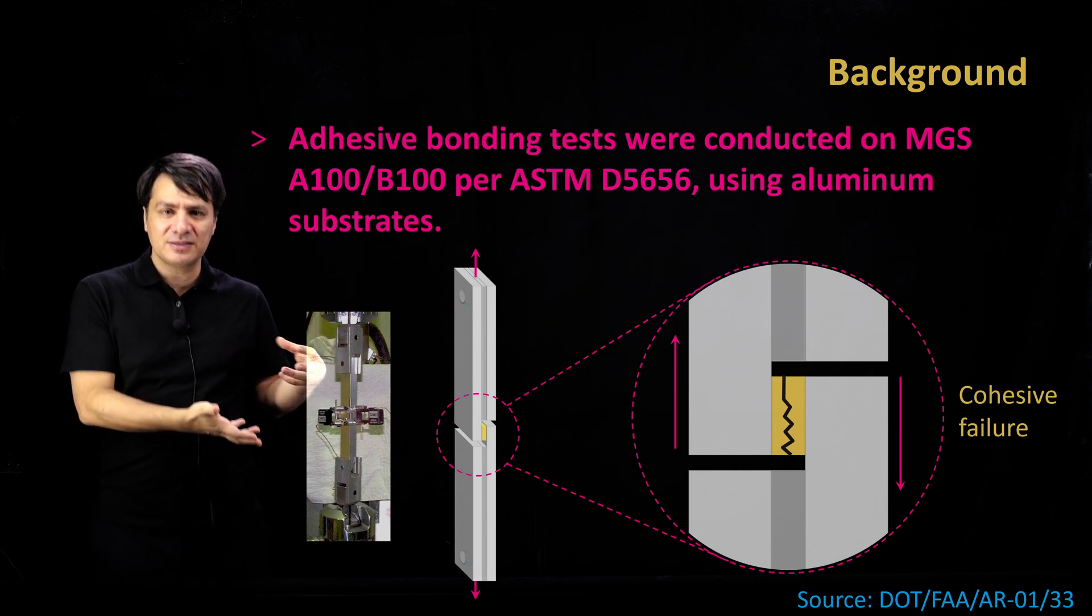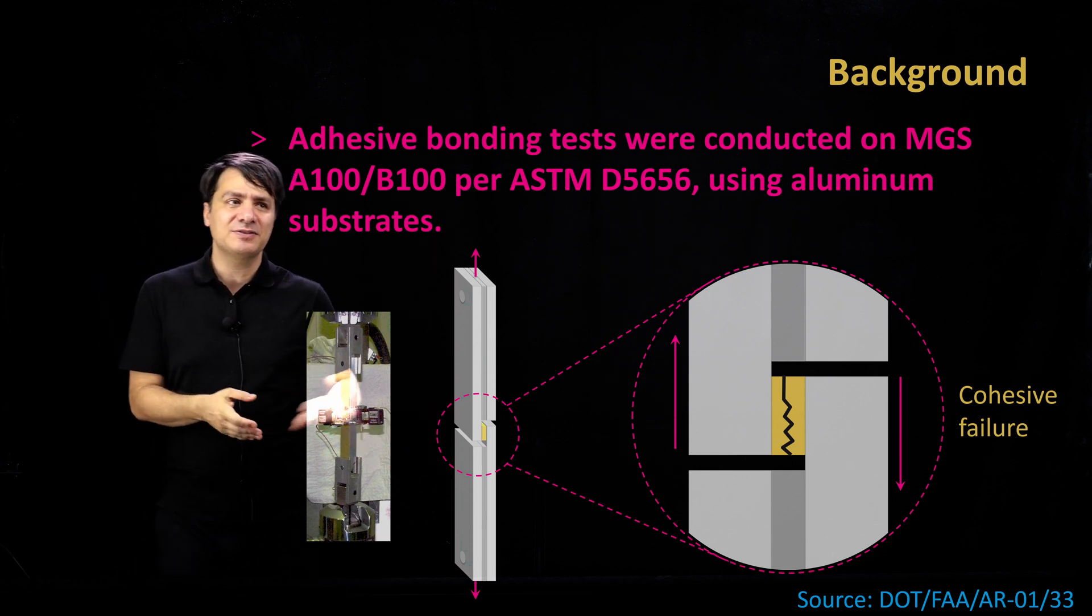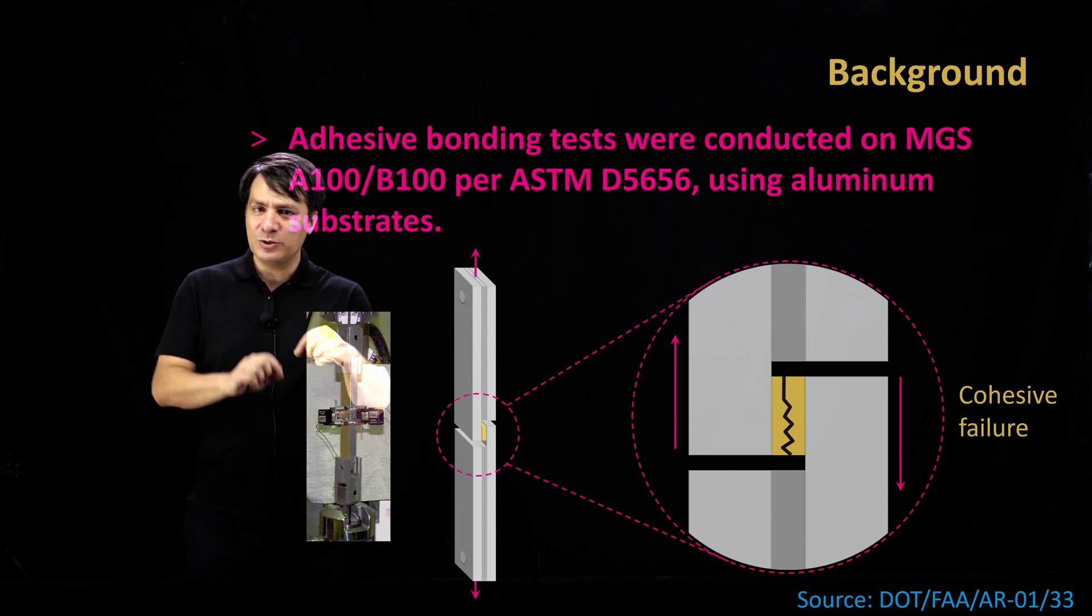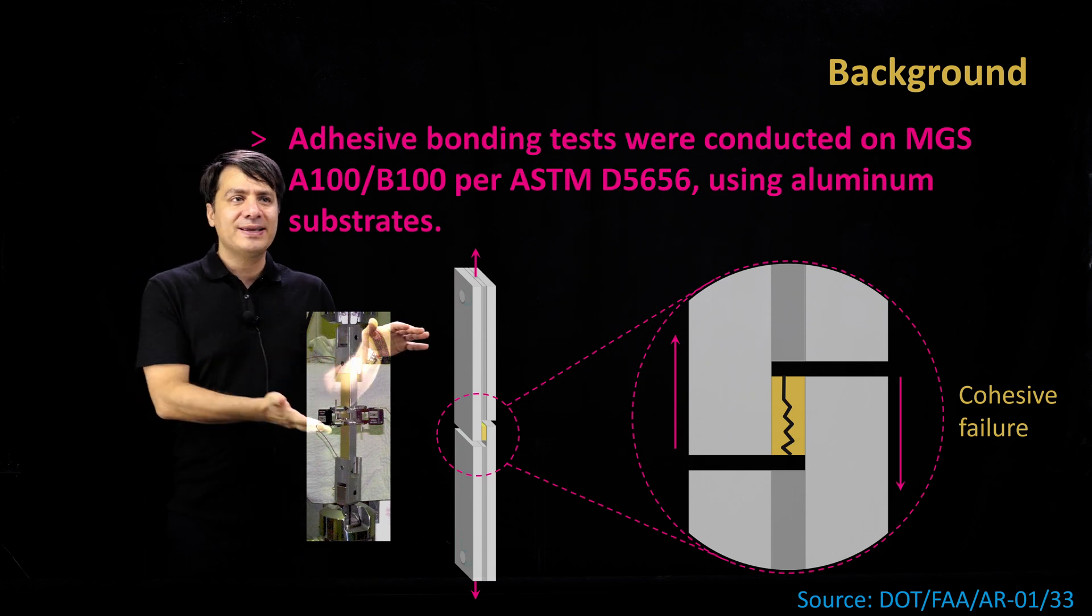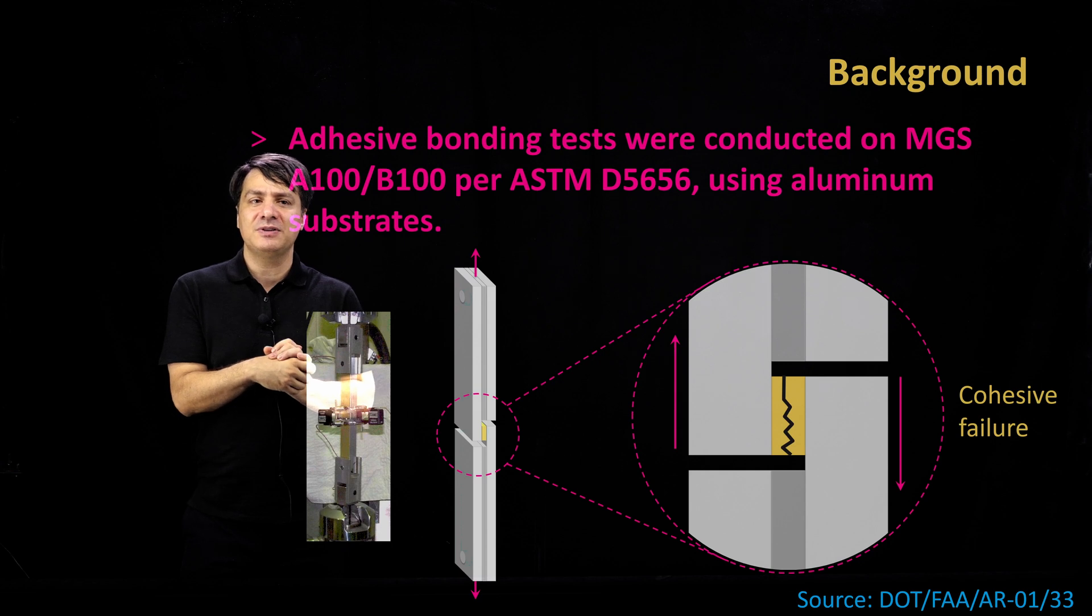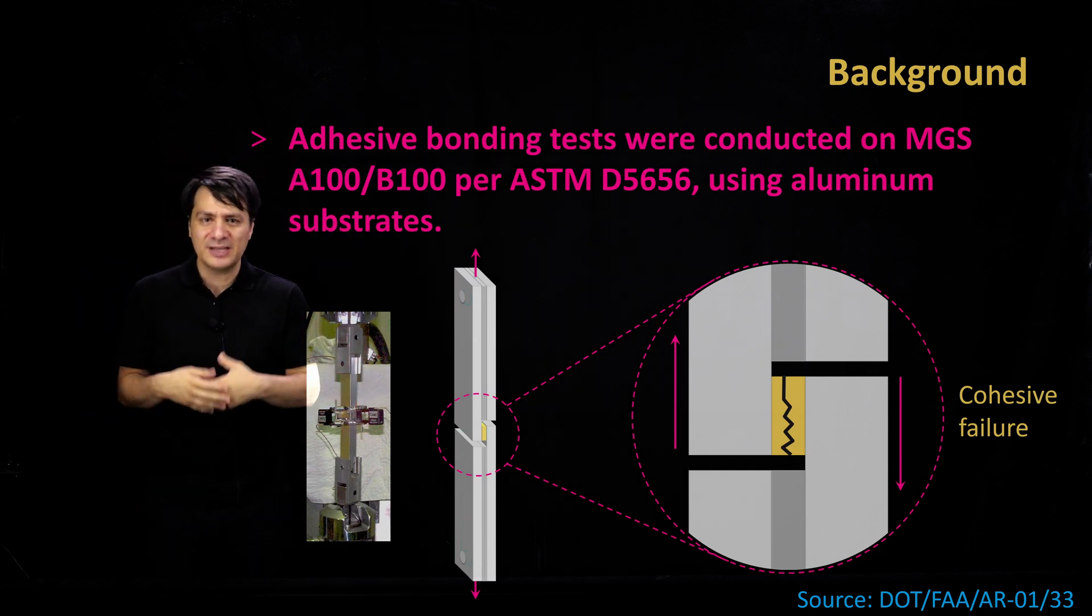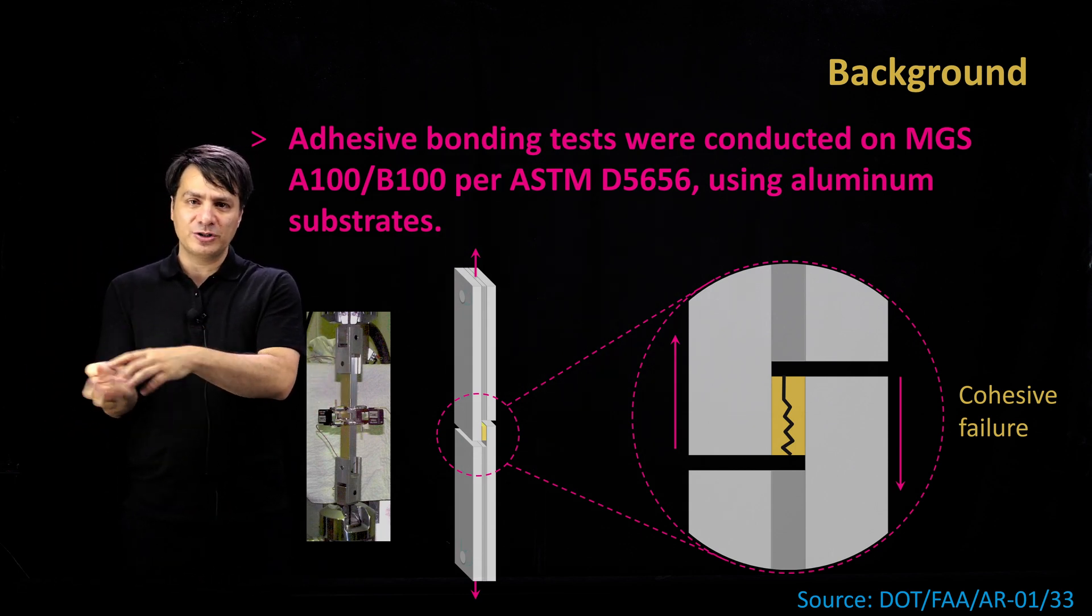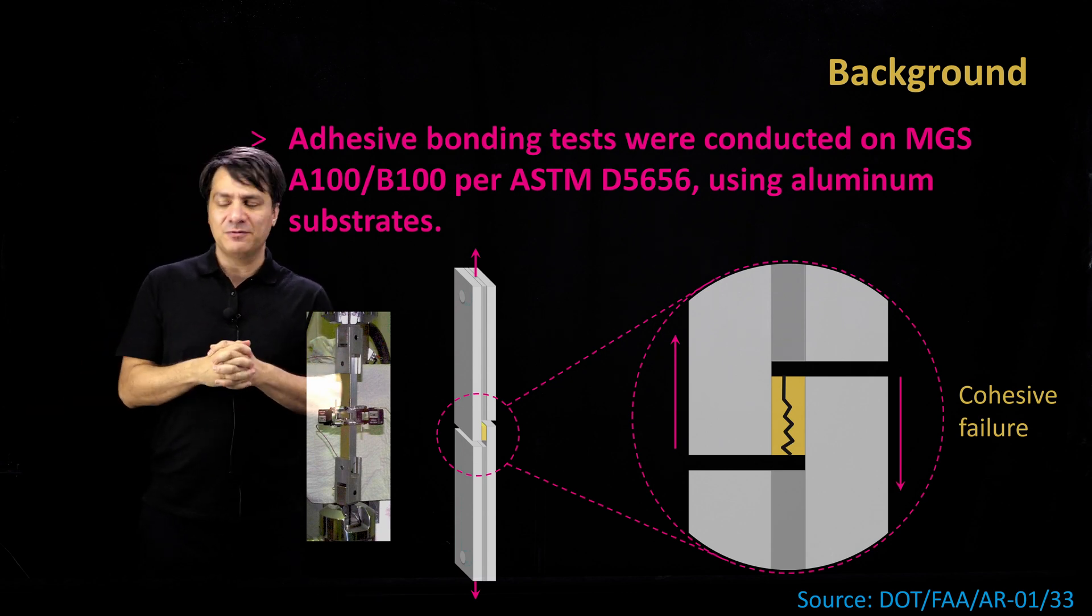In this case study, we have taken a dataset published by FAA on specific adhesives called MGS A100/B100. They have provided 23 experimental data based on different conditions, following ASTM D5656 to do shear tests on these adhesively bonded substrates, in this case metallic substrates. I'm going to explain the dataset and the techniques. We're going to use Gaussian process regression to predict it without enforcing the physics, and then with a physics-informed approach.